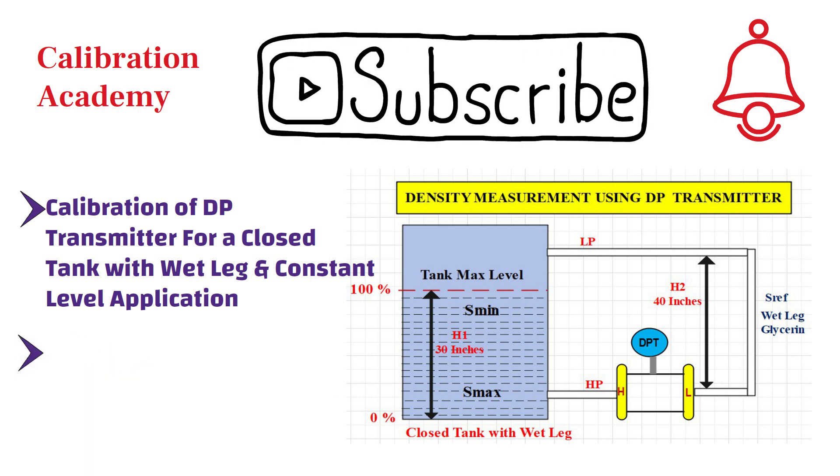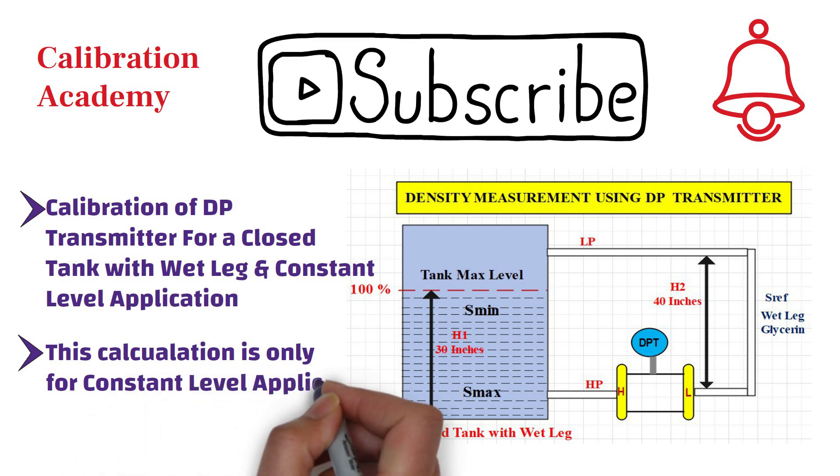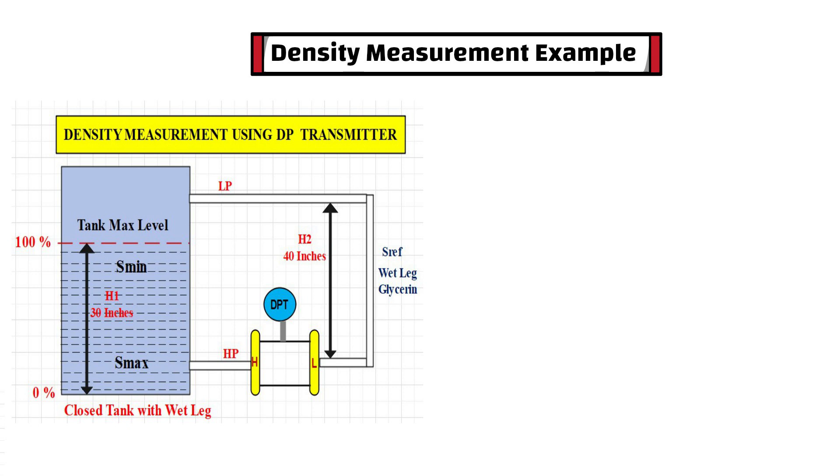It is important to note that this calculation is used only for constant level application. Now let's go to the calculation steps. As you can see, this is an example of density measurement using DP transmitter for a closed tank with wet leg.